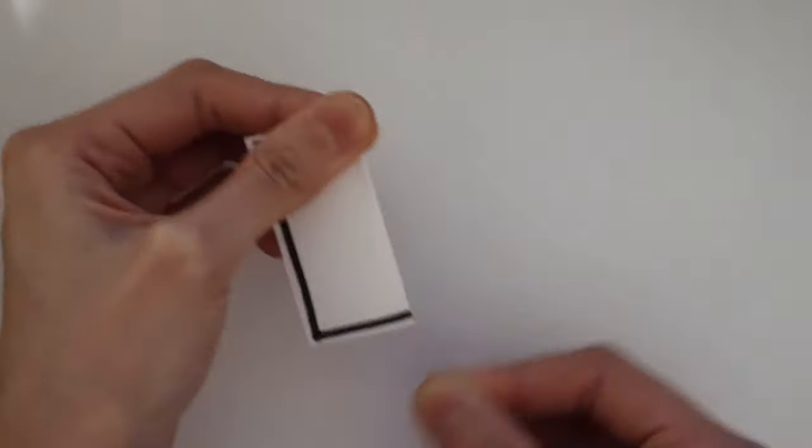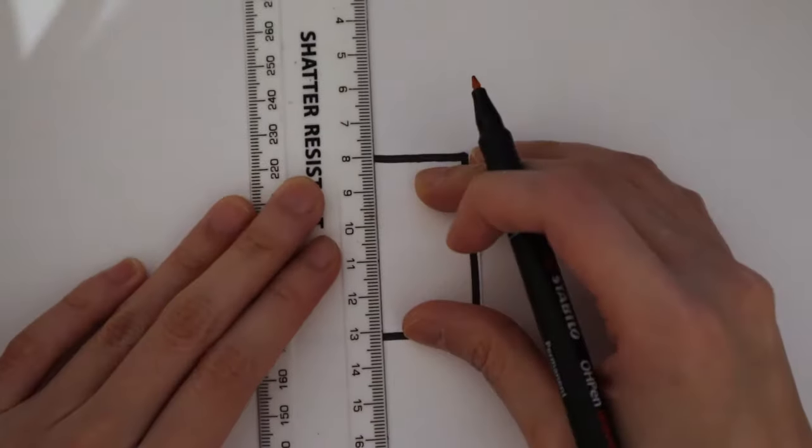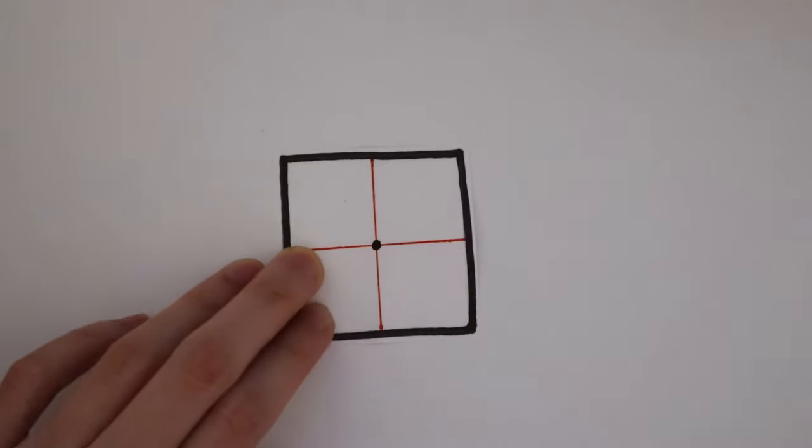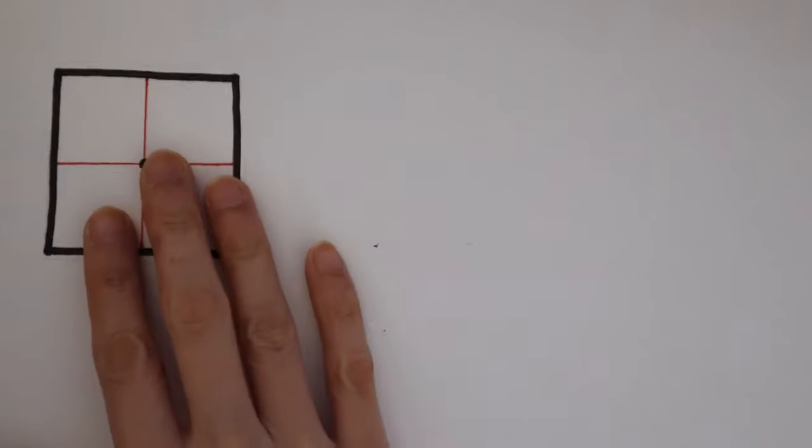For a simple uniform object, we can find the center of gravity easily by finding two lines of symmetry. Where the two lines intersect, that's the center of gravity.